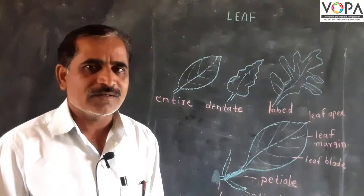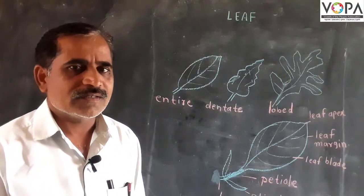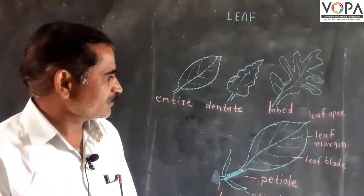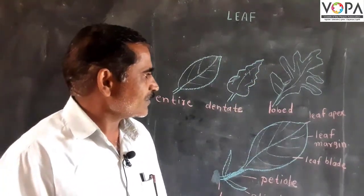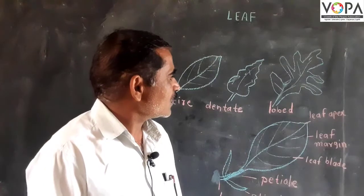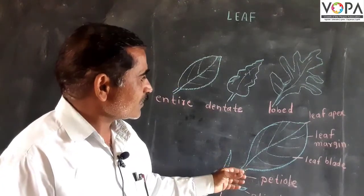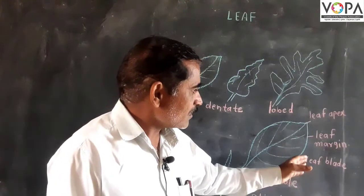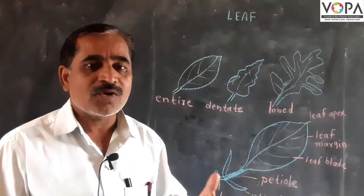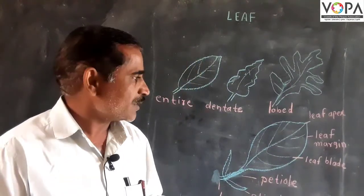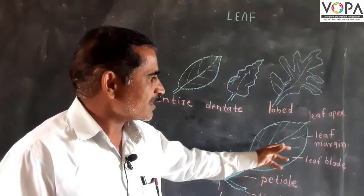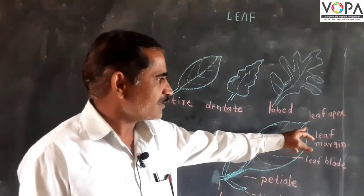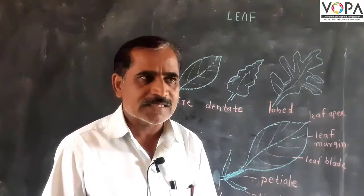We are going to learn about an important part of plants: the leaf. The broad and spread-out part of the leaf is called the leaf blade, and the tip of the leaf is called the leaf apex.